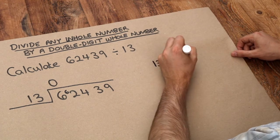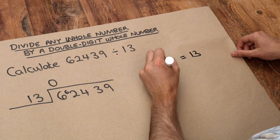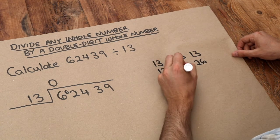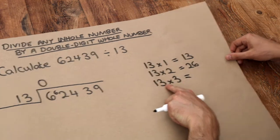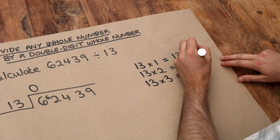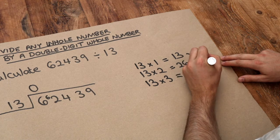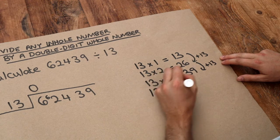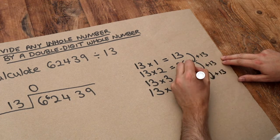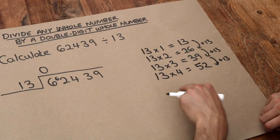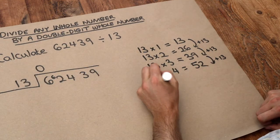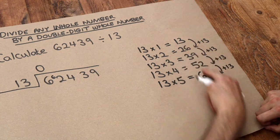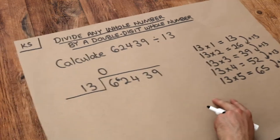13 times 1 is 13. 13 times 2 is 26. 13 times 3, well we're adding one lot of 13 each time so we could just add 13 on the right here because we've got one more lot of 13. So that's 39. 13 times 4, if we add another 13 that's 52. And technically we might need all the way up to 13 times 9. So let's just keep going. That's 65. I'm going to leave that for the moment and we'll see if we need any more as we go along.